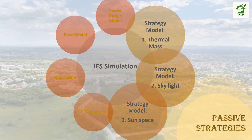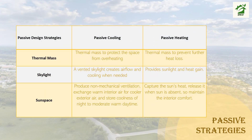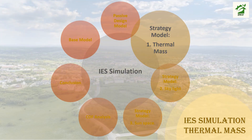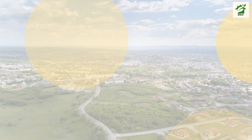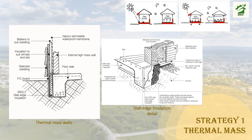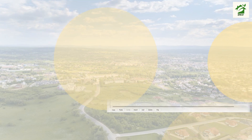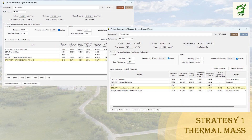Three design strategies will be applied to the passive model for passive cooling and heating: thermal mass, skylight wind shaft, and sun space for the guest room. The first strategy is thermal mass. The most commonly used structural elements are concrete slabs and walls, which should be placed at certain positions to receive adequate sunlight, improving comfort and maintaining moderate temperatures. The wall and floor slab are adjusted to have high thermal properties with cast concrete and proper insulation.